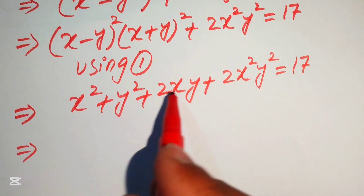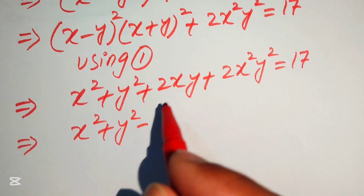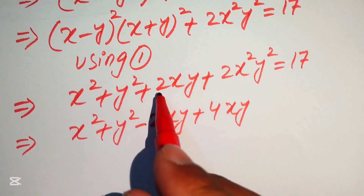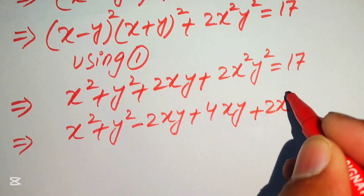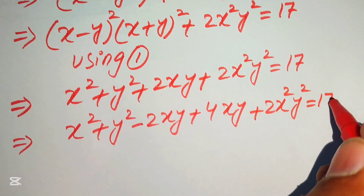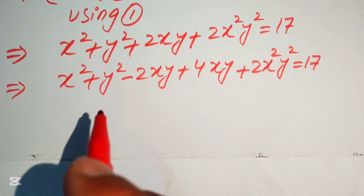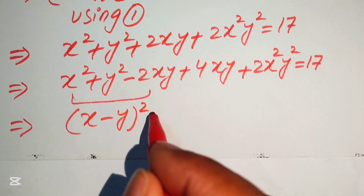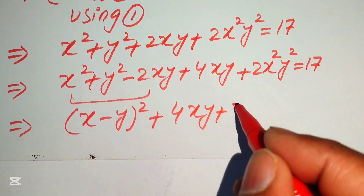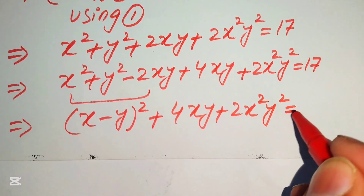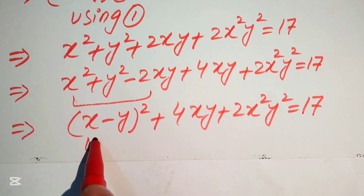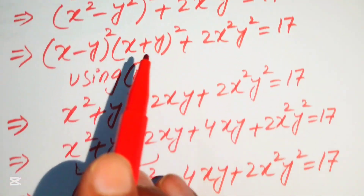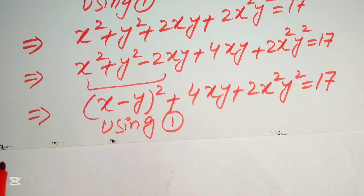We rewrite x² + y² as (x−y)² + 2xy − 2xy + 4xy to separate the terms: (x−y)² + 4xy + 2x²y² = 17. Applying equation 1 again, (x−y)² = 1, so substituting we get 1 + 4xy + 2x²y² = 17.